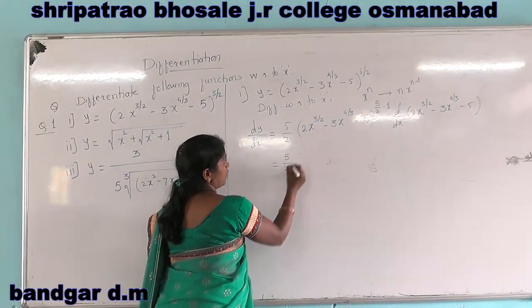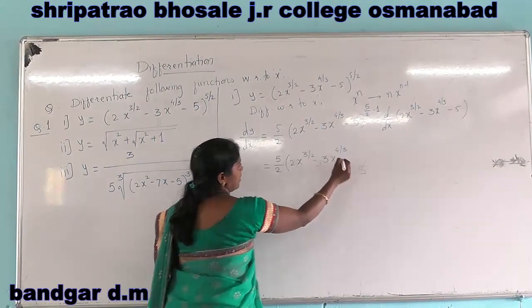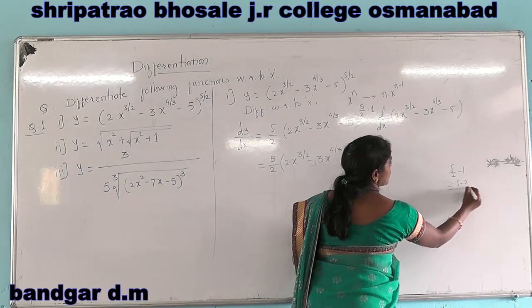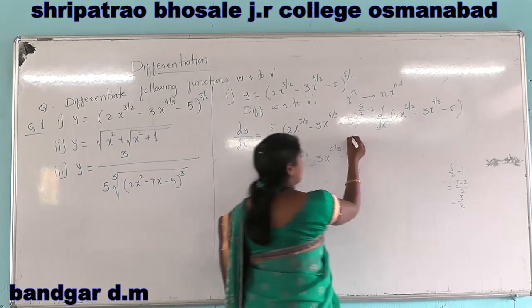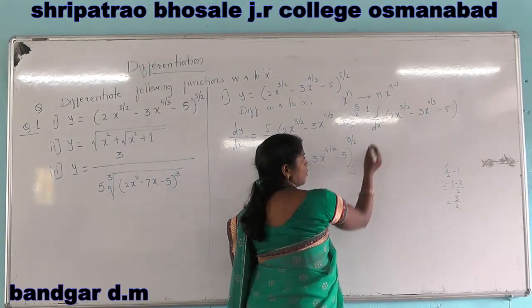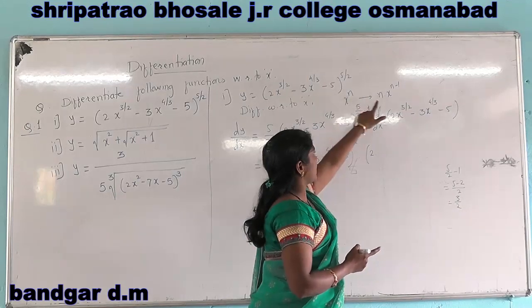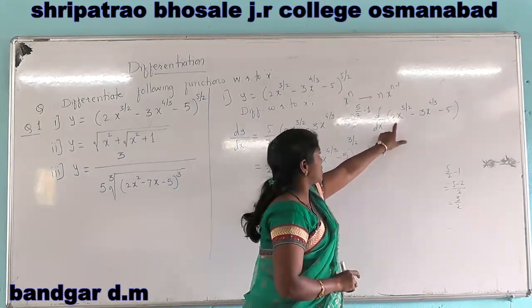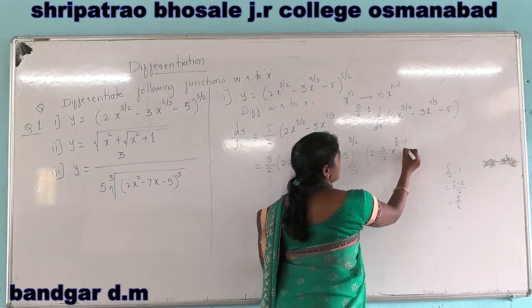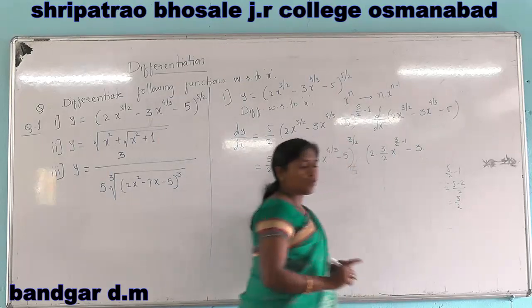So dy by dx equals 5 by 2 into x raised to 3 by 2, minus 3x raised to 4 by 3, minus 5, raised to 5 by 2 minus 1. Now 5 by 2 minus 1 is 5 minus 2 upon 2, which gives 3 by 2. So the power is 3 by 2, into the derivative of this inner function. The constant 2 remains as it is; x raised to n gives derivative n into x raised to n minus 1. We get 3 by 2, x raised to 3 by 2 minus 1.